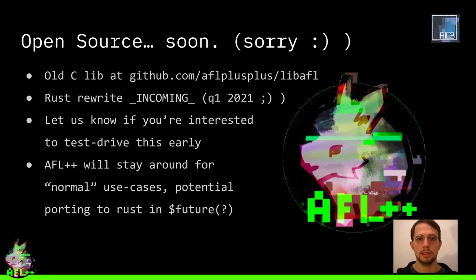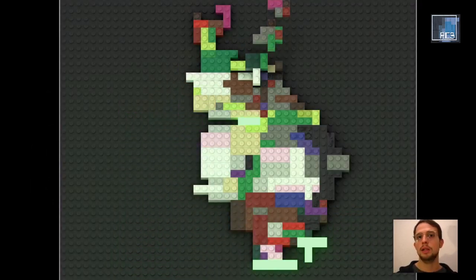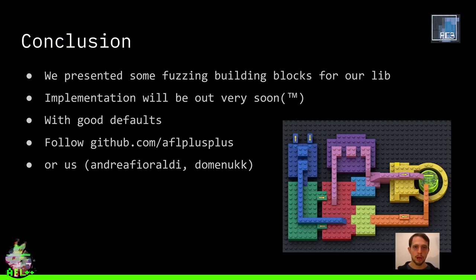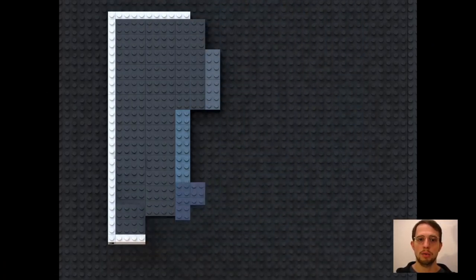If you're super interested, shoot us a message; we will let you know as soon as possible and can also give you early access. AFL++ will stay around for normal use cases, so if you just want to fuzz, you can still do it with AFL++. Thank you all for listening. We showed you the main fuzzing building blocks and how we translate them to our library, which will be out very soon. We think we chose good defaults and will provide examples like a libFuzzer-like example that you can just use and adapt to your own harnesses. Follow our GitHub project and us to know more about updates, and enjoy the rest of RC3 — thank you so much.